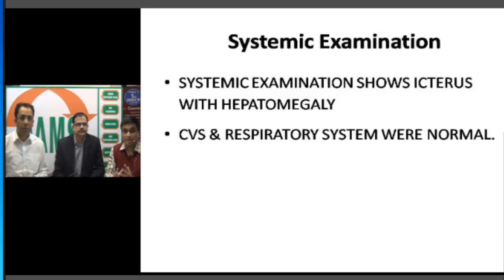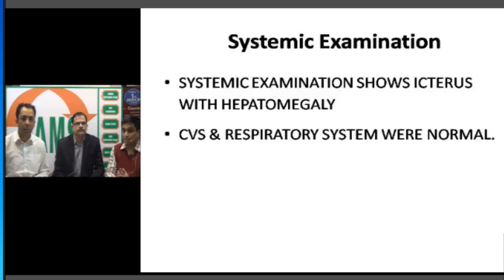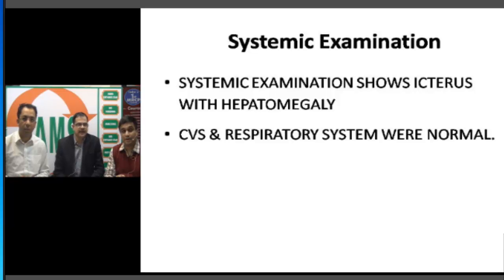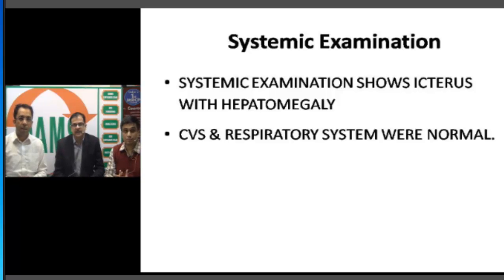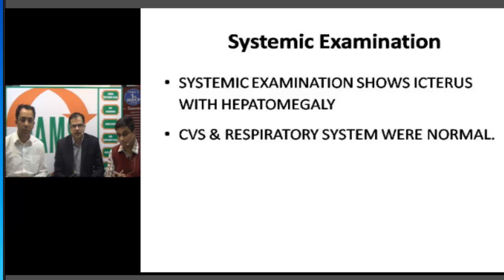We are dealing with a patient who has a neurological illness that is diffuse and cortical in nature. Systemic examination shows icterus with hepatomegaly. This icterus could be the reason for the patient's deteriorating neurological condition — the patient could be having hepatic encephalopathy or metabolic causes due to chronic alcohol abuse. CVS and respiratory system examination were normal.